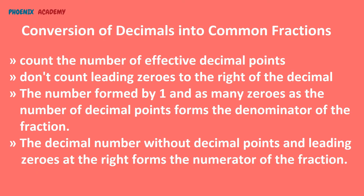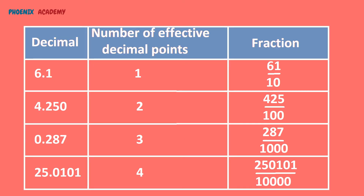Conversion of decimals into common fractions: to convert a decimal into a fraction, first count the number of effective decimal places. No need to count the leading zeros to the right of the decimal point. The number formed by 1 and as many zeros as the decimal places forms the denominator of the fraction. The decimal number without the decimal point and leading zeros forms the numerator. For example, 6.1 — the number of effective decimal places is 1, so the numerator will be 61 and the denominator will be 10.